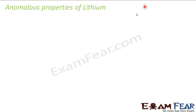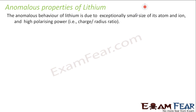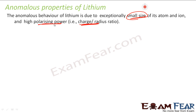There are some anomalous properties of lithium, and that is mostly because of the small size of the lithium atom and the high charge-to-size ratio. So it has higher polarizing power. It can attract water molecules and it can do other things which other Group 1 elements cannot do.